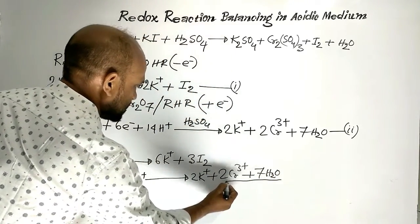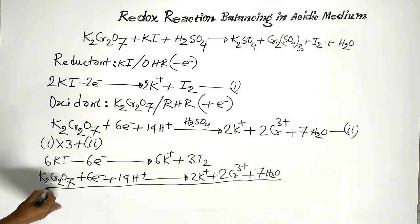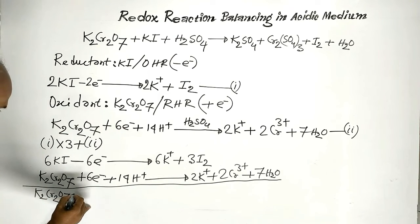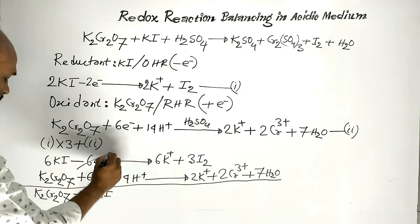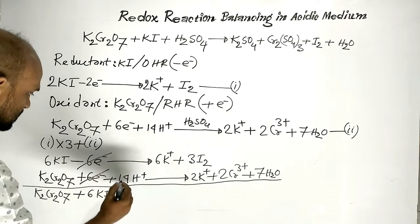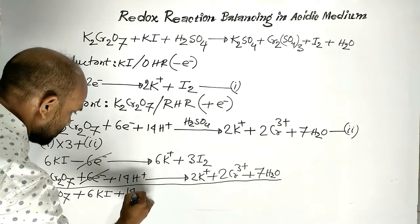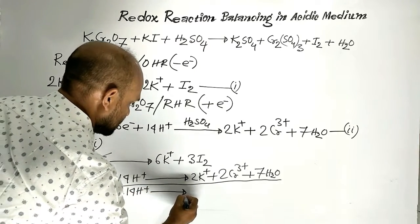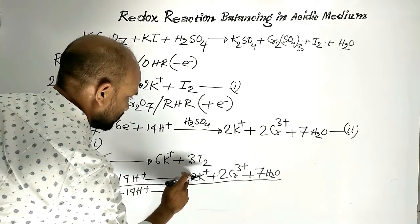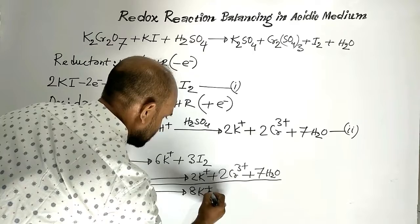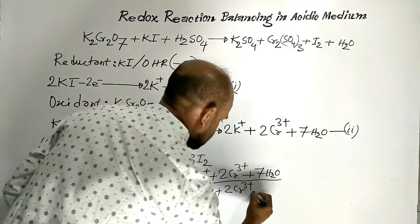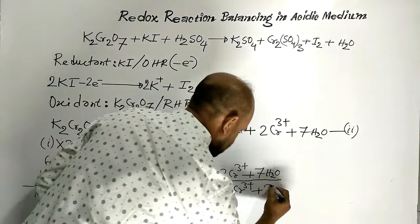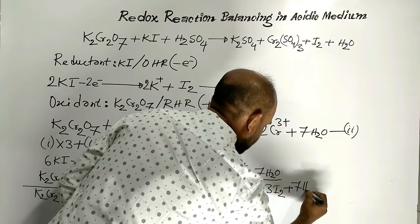Now these two reactions are added. Then we get potassium dichromate plus six potassium iodide. These six electrons cancel these six electrons, plus 14 protons. On the right side: six potassium ions plus two potassium ions, so total eight potassium ions, plus two chromium-3-plus ions, plus three iodine molecules, plus seven molecules of water.